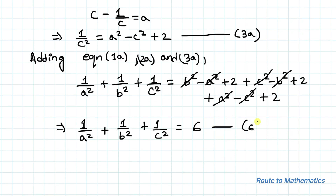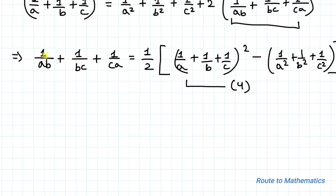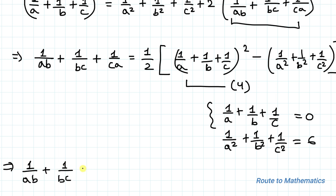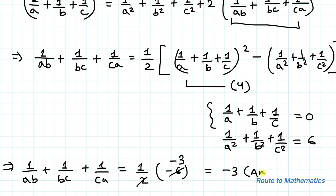We are asked to find 1 by ab plus 1 by bc plus 1 by ca. From equation 5 we have 1 by a plus 1 by b plus 1 by c equals to 0, and from equation 6 we have 1 by a square plus 1 by b square plus 1 by c square equals to 6. Substituting into equation 4: 1 by ab plus 1 by bc plus 1 by ca equals to 1 by 2 times (0 squared minus 6) equals to negative 3. So our answer is minus 3.